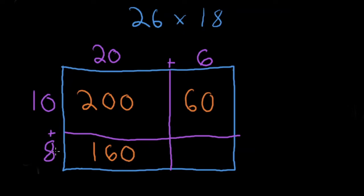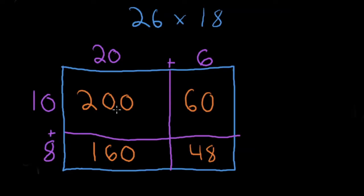One last box — touch 8 times 6: 8 times 6 gives us 48. Every box is now filled in with a number. We've taken a larger multiplication problem and broken it into more manageable chunks, but we are not done — we still need to get our total product.